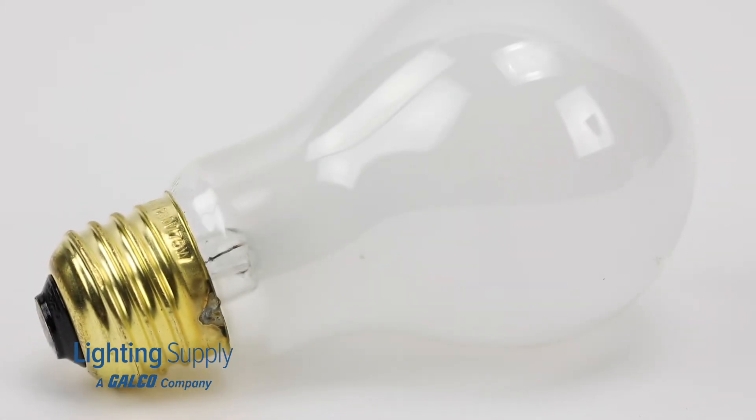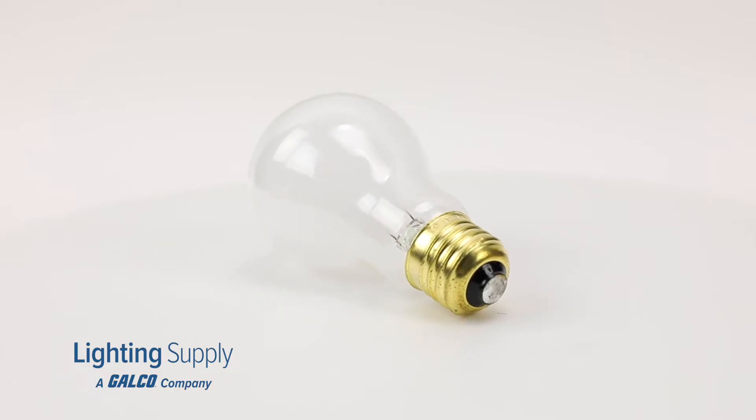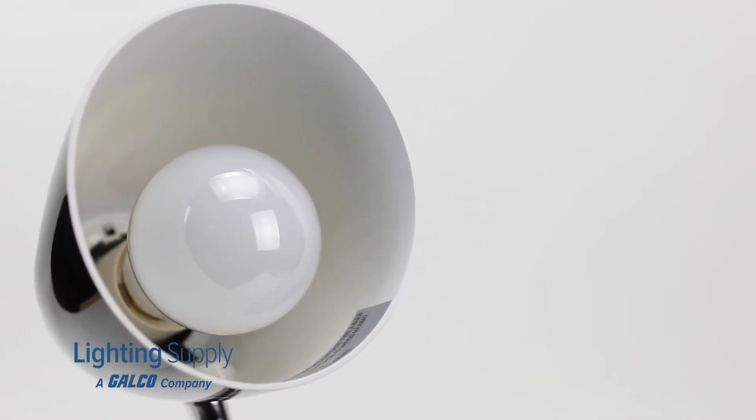Because of this the average life of this dimmable bulb is 8,000 hours. These dimmable bulbs are frosted and have a voltage of 130 volts.